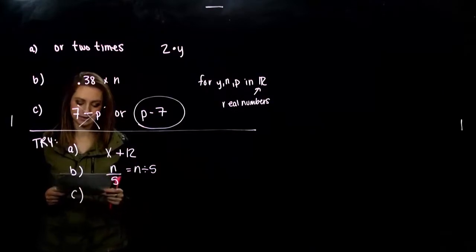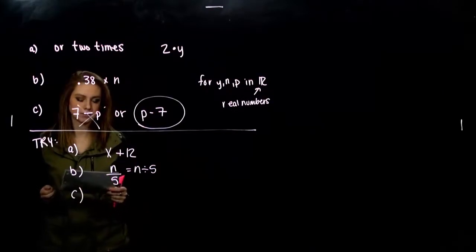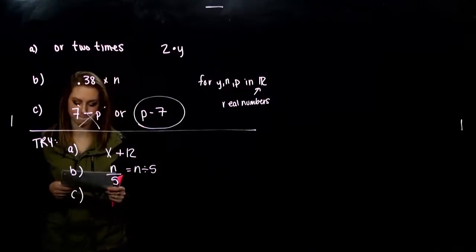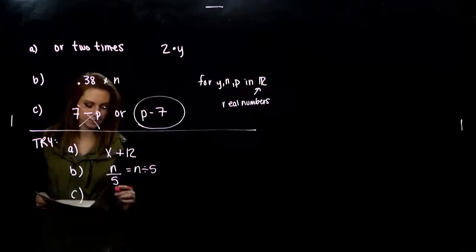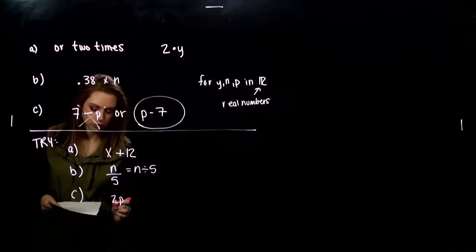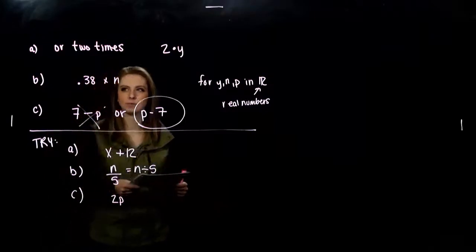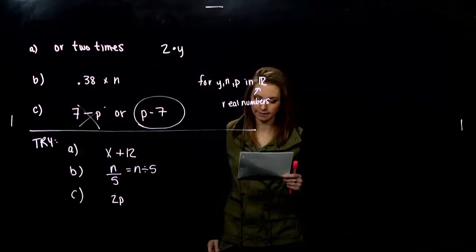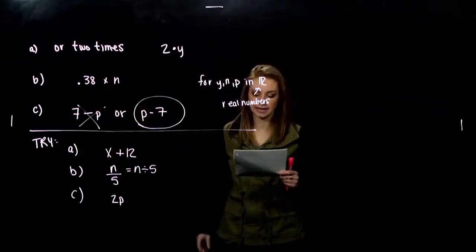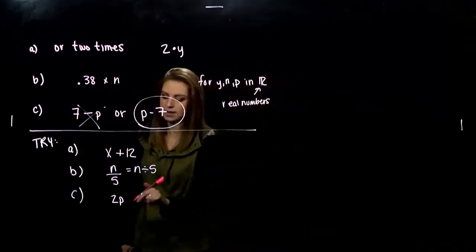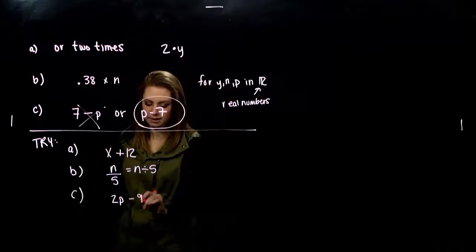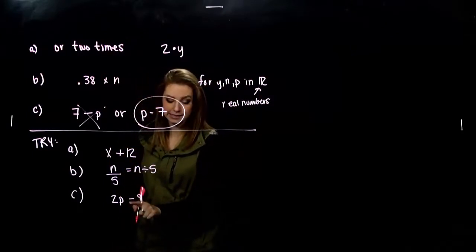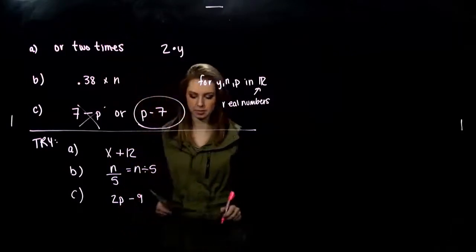And part c. Nine less than twice some number. So two times some number. Twice some number. We've seen that one before. In that first example. I'm going to say 2p. And I need, I lost it, nine less than that. So from that value, I need to take away nine. I have nine less than two times some number p.